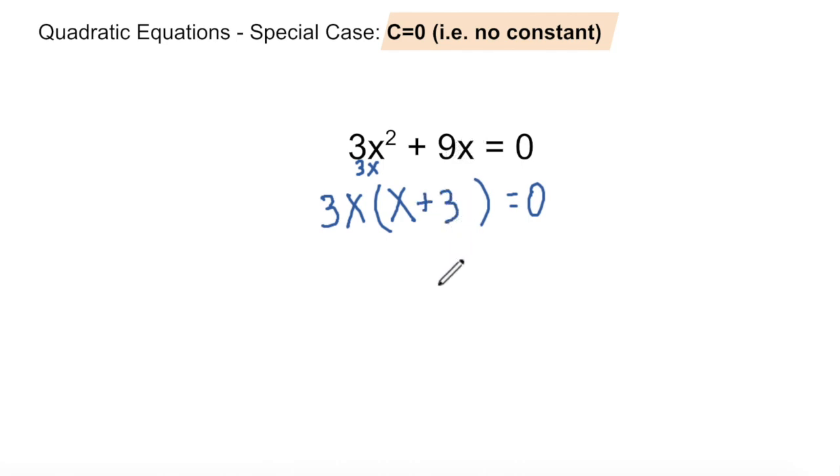That's all that's left. So we can quickly test this. 3x times x is 3x squared. And then 3x times 3 is 9x. So we apply the distributive property to our factored version here and see if we get what we started with. And we do indeed. So now we can apply the zero product property and solve for our two solutions of x.